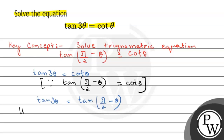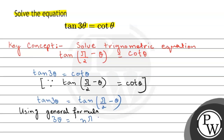Now, using the general formula, we get: 3θ is equal to nπ plus π/2 minus θ.